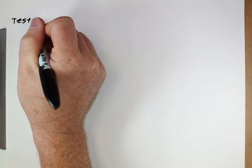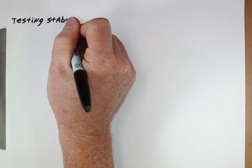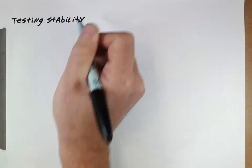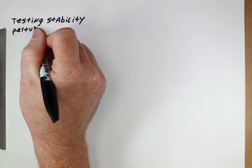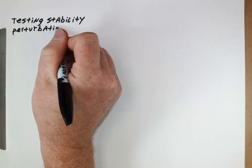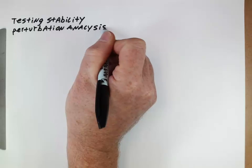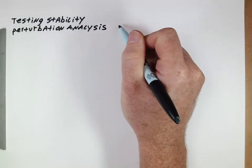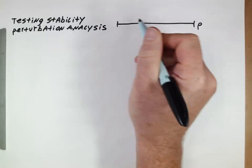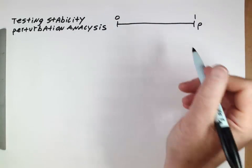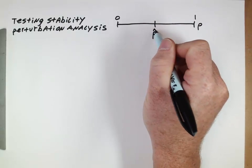What we want to do is think about testing the stability of the equilibrium that we derive. We're going to do this by doing something called a perturbation analysis. Conceptually, we're thinking about our value of p, which can go from 0 to 1, and if we do a derivation and get some equilibrium value of p that we're able to derive.